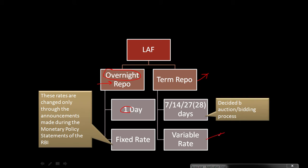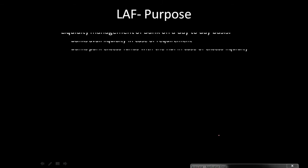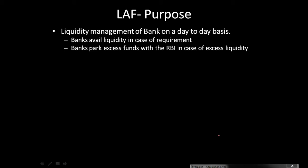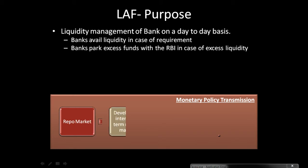Let's understand how the repo market works. The purpose of LAF is basically liquidity management — as the name 'Liquidity Adjustment Facility' suggests. If a bank has excess cash, it parks that excess cash with the RBI and the RBI pays them some interest. In case a bank has a deficiency of cash and requires more funds, it can borrow money from the RBI and in return the bank has to pay some interest to the RBI.